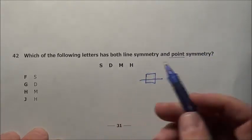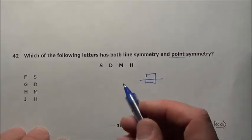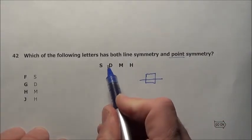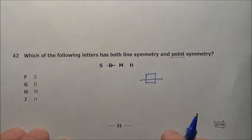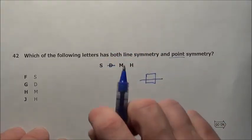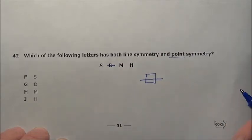So which of these letters, well let's look which ones have line symmetry of some nature. D has line symmetry right here, but if I take it and I spin it will it land on itself? No it will not until you spin it 360 degrees, that's not going to work.